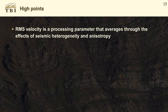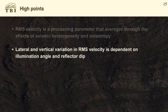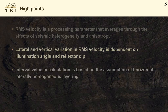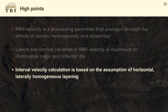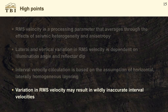To summarize: RMS velocity is a processing parameter that averages through the effects of seismic heterogeneity and anisotropy in the overburden above the reflector. Lateral and vertical variation in RMS velocity is dependent on the illumination angle and the reflector dip. Interval velocity calculation assumes horizontal, laterally homogeneous layering, which is a rare case in a foothills-type setting. Variation in RMS velocity may result in wildly inaccurate interval velocities — even in the gentle case we just looked at, we cannot trust those interval velocities to be geological.